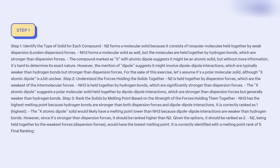Step 1: Identify the type of solid for each compound. N2 forms a molecular solid because it consists of non-polar molecules held together by weak London dispersion forces. NH3 also forms a molecular solid, but its molecules are held together by hydrogen bonds, which are stronger than dispersion forces.